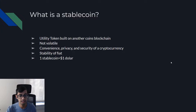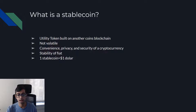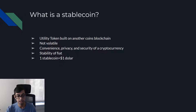So what is a stablecoin? A stablecoin is a utility token built on another coin's blockchain. There is no volatility — you get the convenience, privacy, and security of a cryptocurrency, but you also get the stability of fiat. One stablecoin equals one dollar.